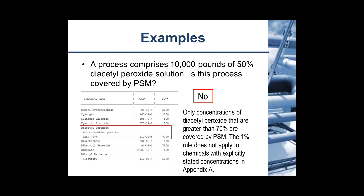The next example: a process comprises 10,000 pounds of a 50% diacetyl peroxide solution. Is this process covered by PSM? Going to Appendix A of OSHA's PSM standard and looking up diacetyl peroxide, there is a concentration stated — it must be greater than 70%. So since this example is 50% diacetyl peroxide, only concentrations greater than 70% are covered by PSM. The 1% rule does not apply to chemicals with explicitly stated concentrations in Appendix A.